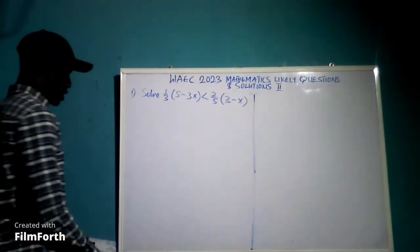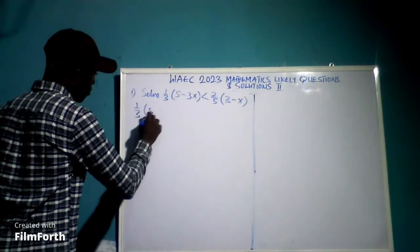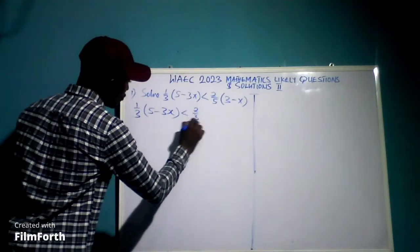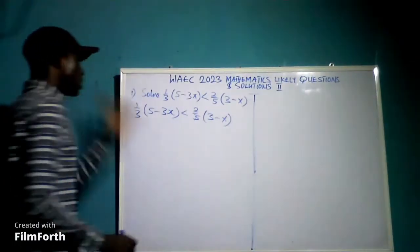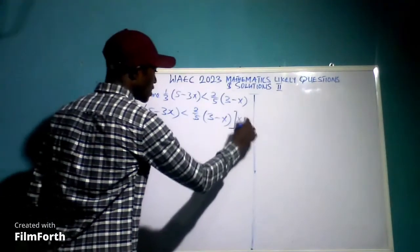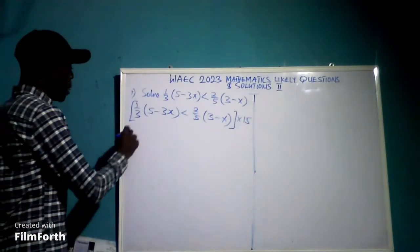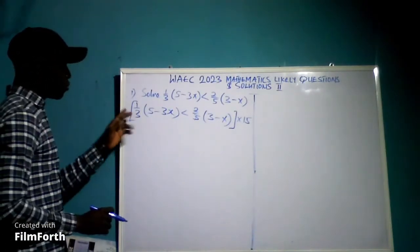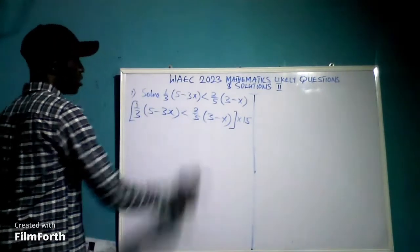Let's have the solution now. We have one-third open bracket 5 minus 3x, close bracket, less than two-fifths open bracket 3 minus x, close bracket. Now, if you multiply the whole inequality by 15, we can remove the fractions so that it will be easier to solve.